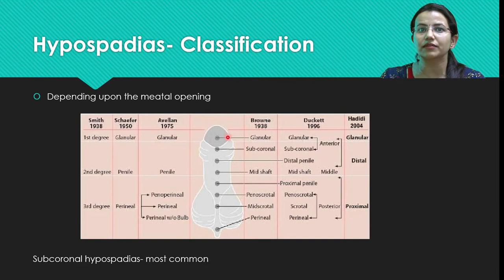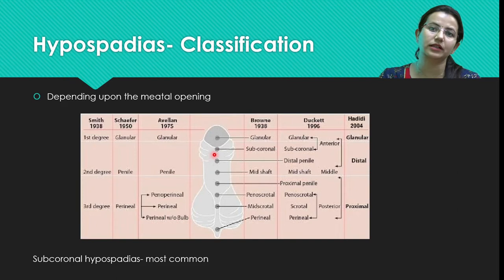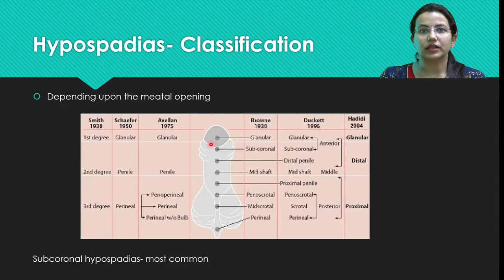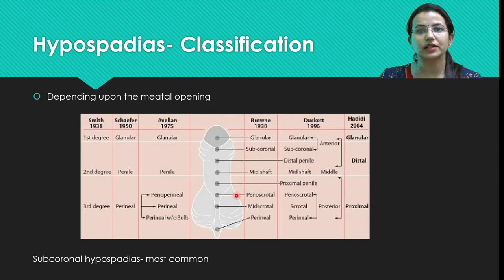The area where the glans meets the penile shaft is called the corona. The opening below the corona is called subcoronal meatus. Progressing proximally: mid shaft is distal penile hypospadias, more proximal is proximal penile hypospadias, at the junction of the penis and scrotum is penoscrotal hypospadias, then scrotal hypospadias, and then perineal hypospadias.